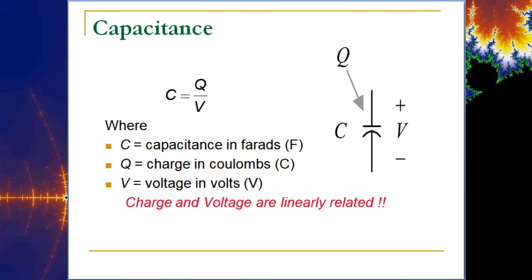The equation relating capacitance to charge and voltage is Q = CV, where capacitance is measured in farads. Most capacitors used in this course are in nanofarads or microfarads, and sometimes millifarads. A millifarad capacitor is very large — almost the size of a soda can or bigger. Charge is measured in coulombs and voltage in volts.